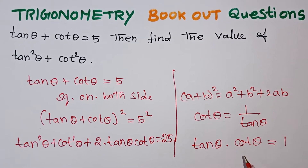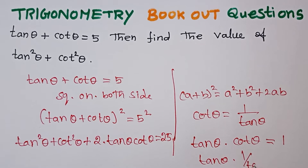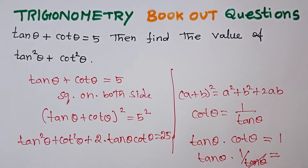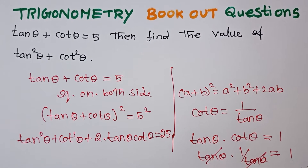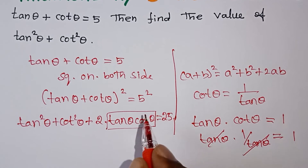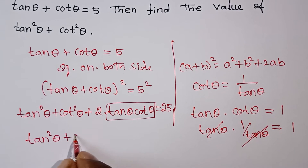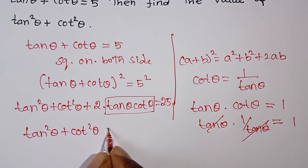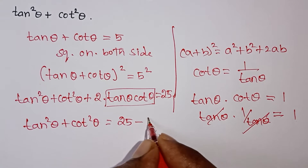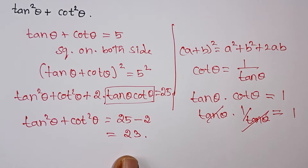Since cot θ is equal to 1 by tan θ, their product is 1. Substituting: tan²θ plus cot²θ plus 2 equals 25, so tan²θ plus cot²θ equals 23. That is the correct answer.